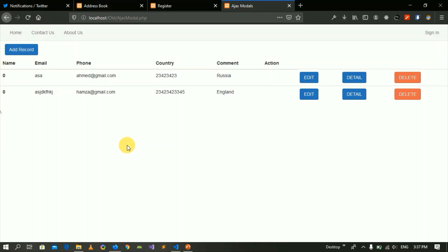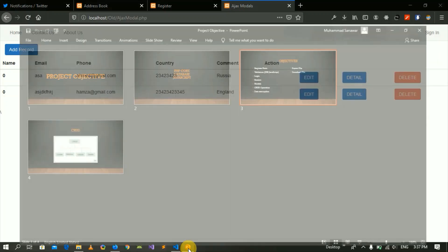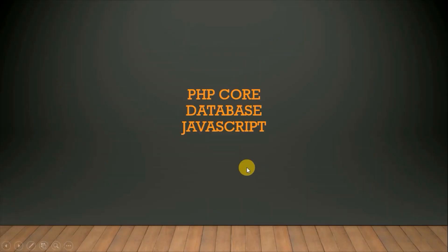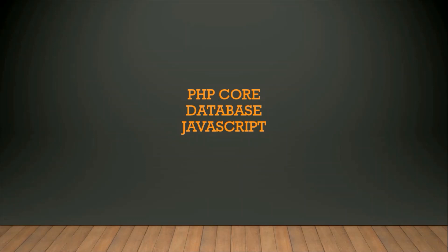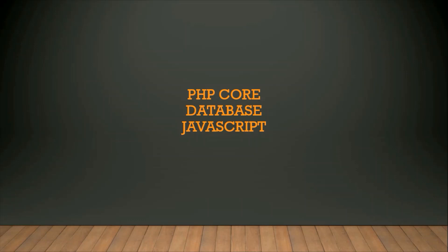So we have to cover all these things. This is a simple project. Our main objective is PHP Core and Database — these are the three main things to cover. In this project we will have a registration form to manage data, then we need validations in both PHP and JavaScript, then a login form to validate the user. We will also cover sessions in PHP.